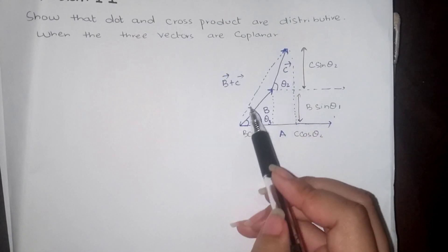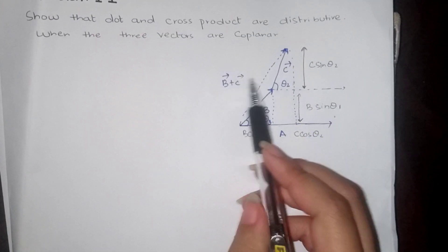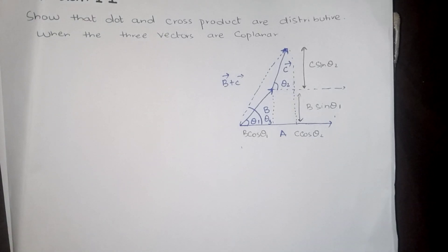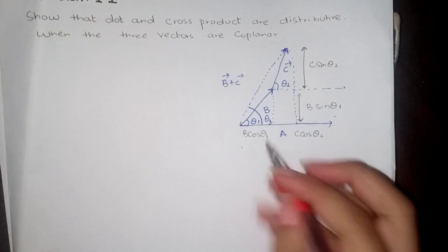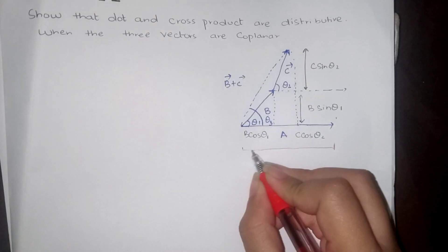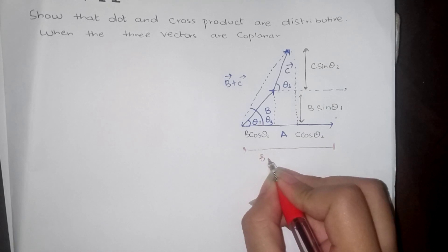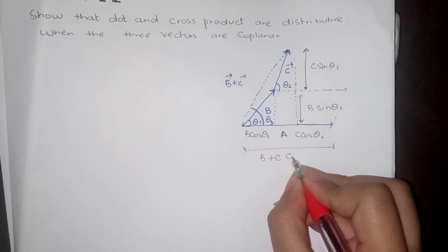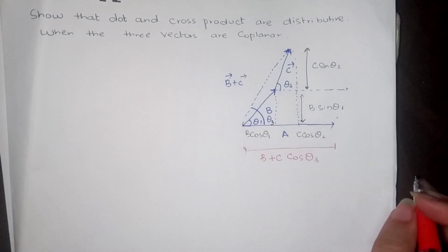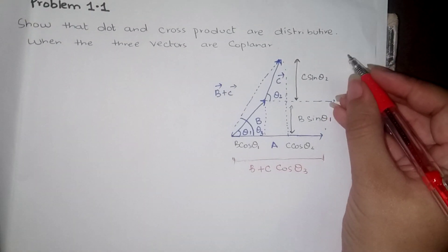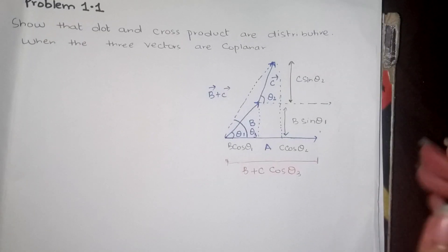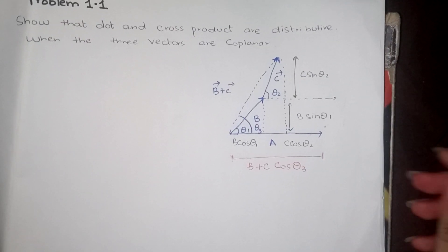Now, what is B plus C? This is B plus C. The component of the projection of B plus C along the axis is B plus C cos theta 3, because the angle is theta 3. And the perpendicular component is B plus C sin theta 3.